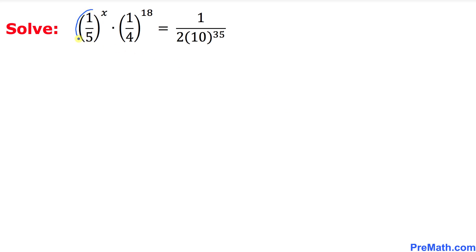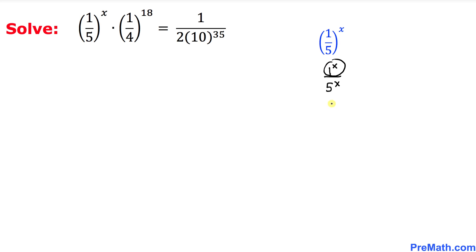Let's focus on the left hand side — this part: 1 fifth power x. This 1 fifth power x could be written as 1 power x divided by 5 power x. And 1 power x is the same as 1, so this could be written as 1 over 5 power x.